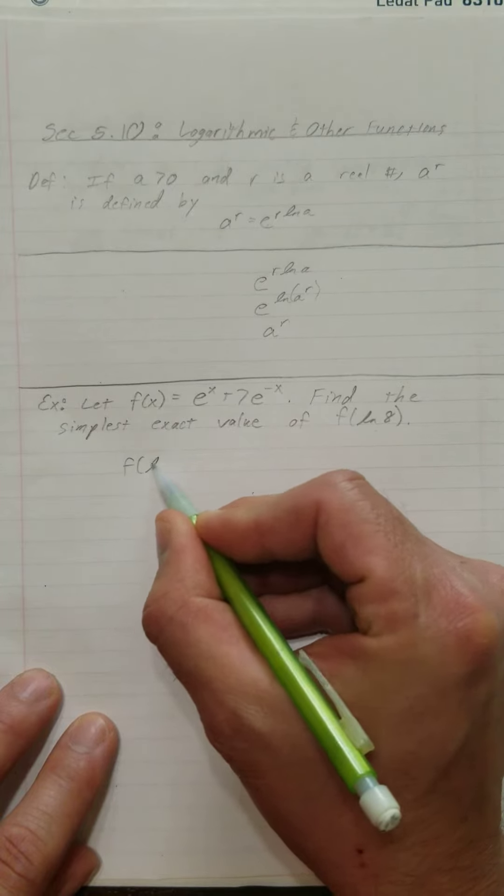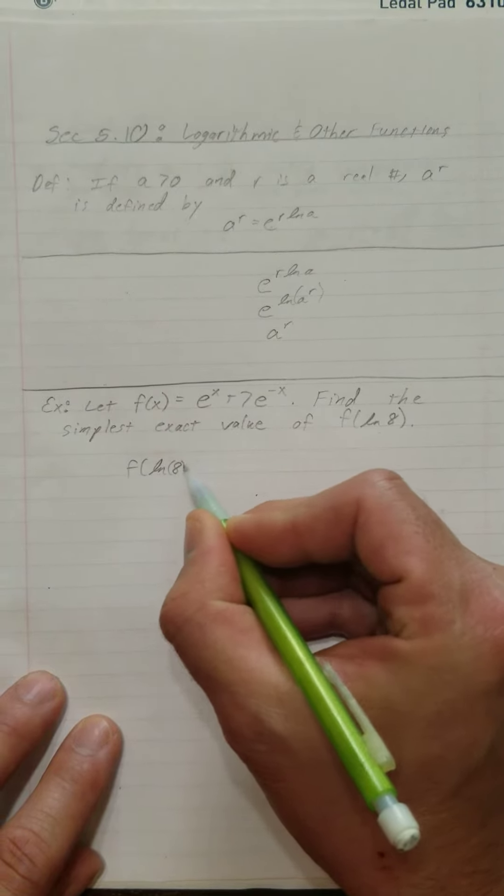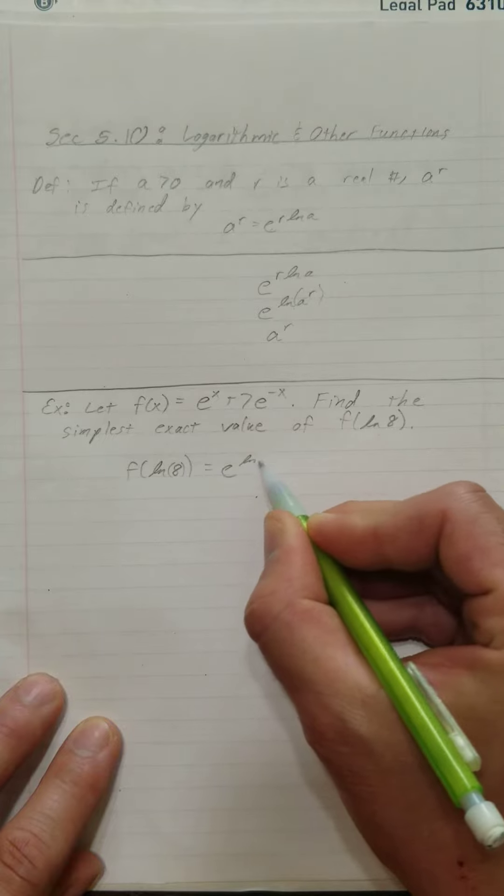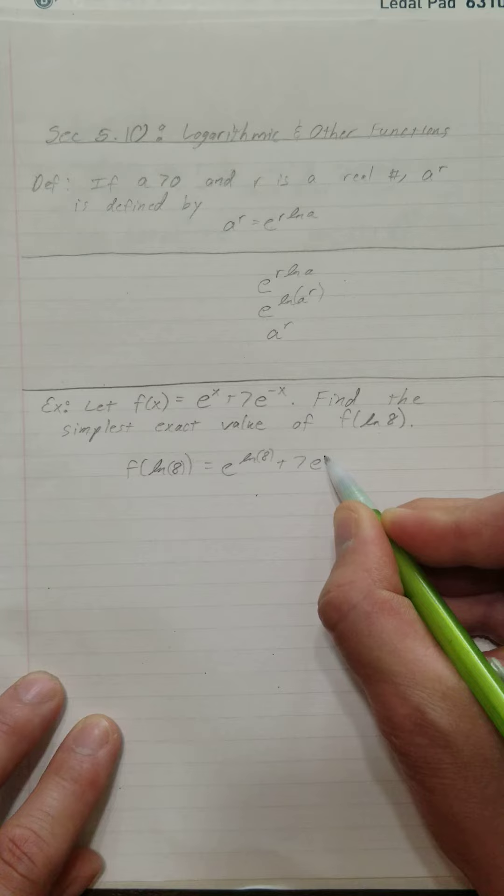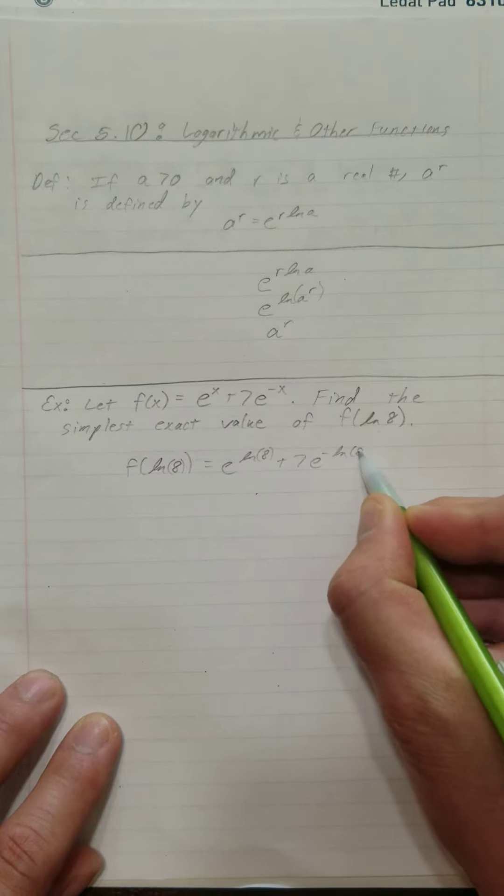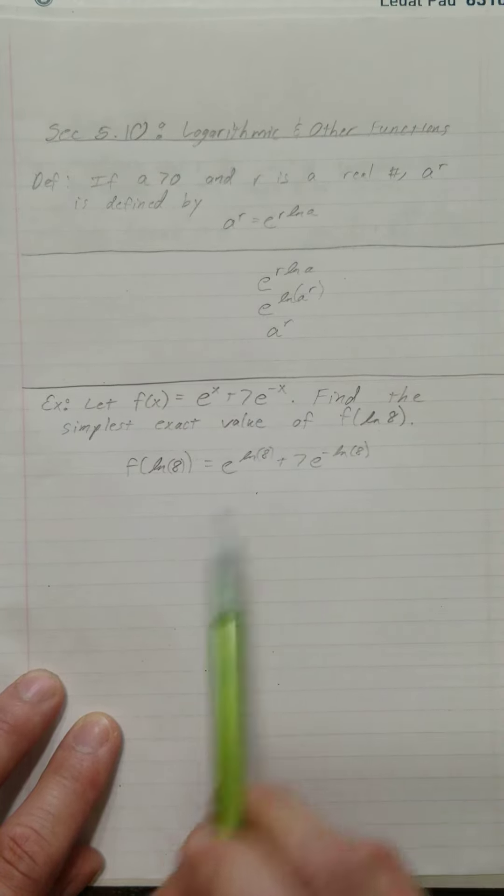So, f evaluated at the natural log of 8. Well, that's e to the natural log of 8 plus 7 times e to the negative natural log of 8. Because we already had the negative sign there.